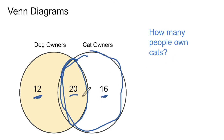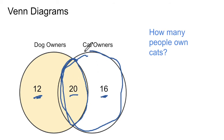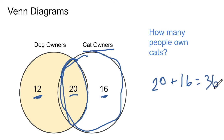So how many people own cats? Well, 20 people own both a dog and a cat, so those are considered cat owners — they're inside the cat owners circle. And so are these 16 people who do not own dogs but still own cats. So to find the number of people who own a cat, we just add the 20 and the 16, because those are the two numbers inside this cat owner's circle. 20 plus 16 gives us 36. We didn't count the 12, because those people are not inside the cat owner's circle.